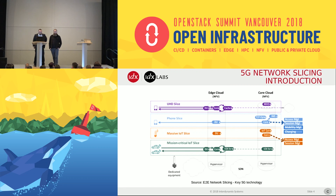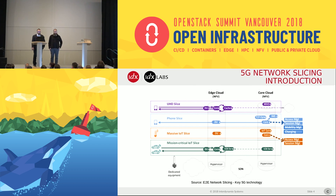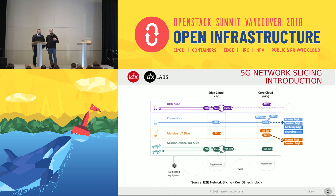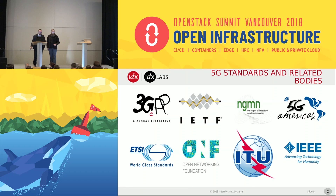In order to understand what network slicing is, we had to read a lot of documents — somewhere between 80 and 100 documents. I came across quite a few diagrams, and this is probably one of my favorites because it shows different slices but also shows the NFVI infrastructure, which in the context of this summit would probably be OpenStack. You can see we have a core cloud and an edge cloud — places where OpenStack could participate in a network slice.